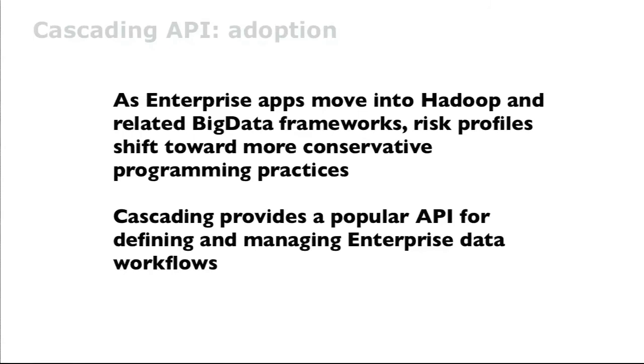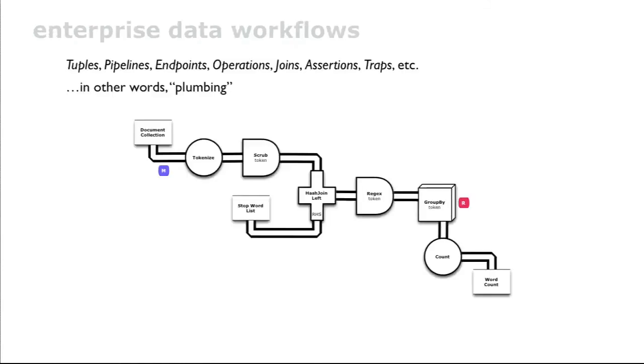And the implication there is that as enterprise is moving more and more into big data frameworks, moving more into Hadoop, the risk profiles for these apps are shifting away from early adopter into more enterprise button-down environments. And along with that, we're seeing cascading as a popular API for managing enterprise data workflows. And data workflows is really our view of the world. That's our starting point.